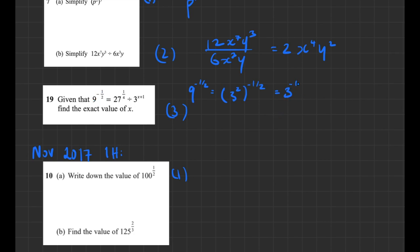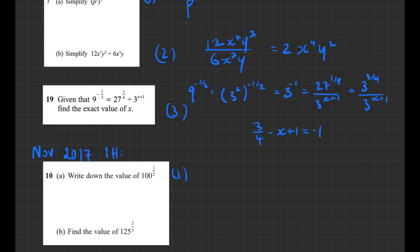A tricky November 2019 question: write all numbers as base 3. Note that 9^(−a/2) = (3²)^(−a/2) = 3^(−a). This equals 27^(1/4) / 3^(x+1). Write 27 as 3³, so 27^(1/4) = 3^(3/4). Then subtract exponents: 3/4 − (x + 1) = −1. Solve: x = 3/4.